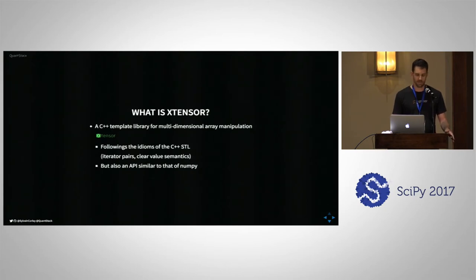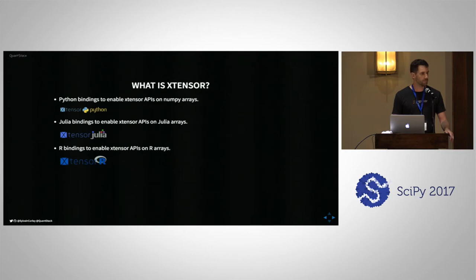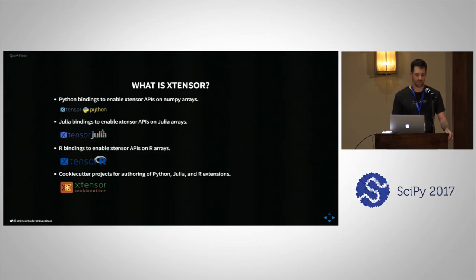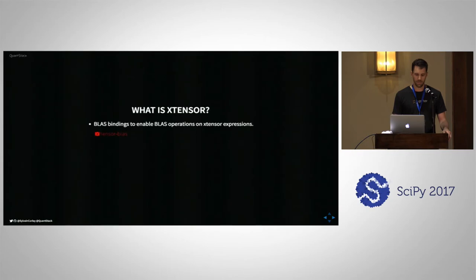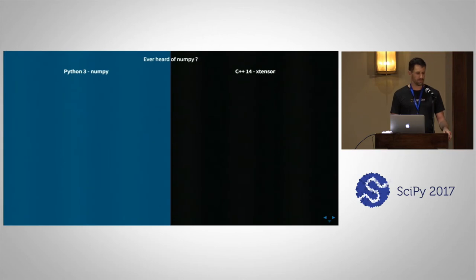Xtensor also has an API that is really similar to that of NumPy. Beyond the C++ library, we offer bindings for Python, Julia, and R, and also a cookie cutter project that enables you to create a template project for bindings targeting multiple scripting languages. Xtensor also offers BLAS bindings for linear algebra operations, SIMD acceleration with xsimd, and it's all open source under a BSD license.